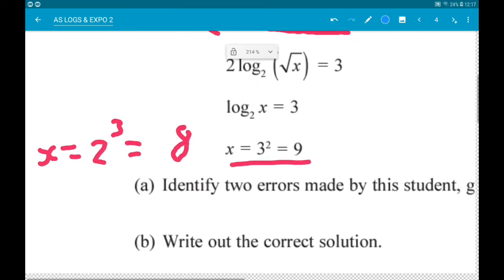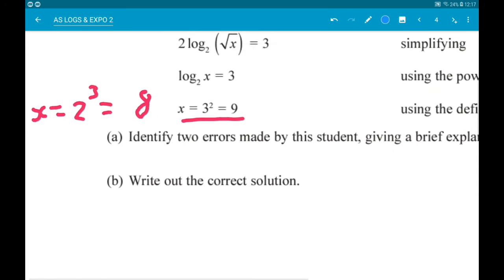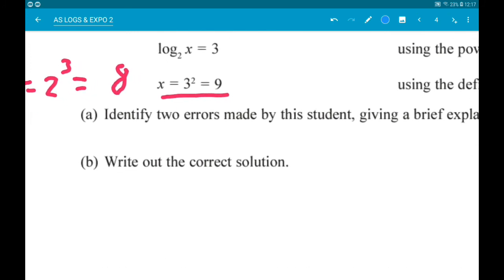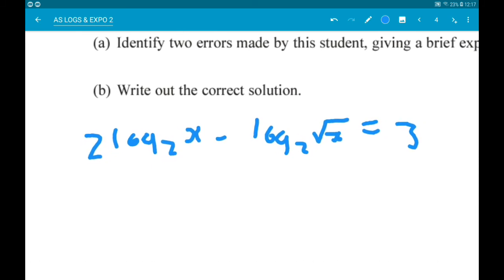Okay, then part B wants us to find the exact solution to the equation. So we have then 2 log base 2 of x minus log base 2 of root x is equal to 3. So the first thing we need to do is make the first log singular. So that becomes log base 2 of x squared.